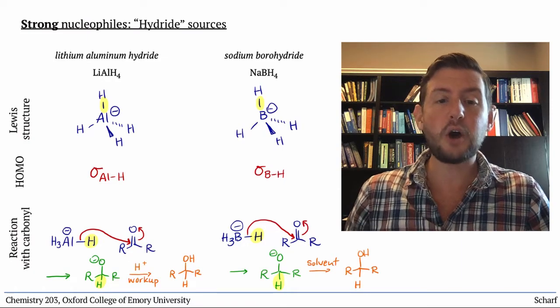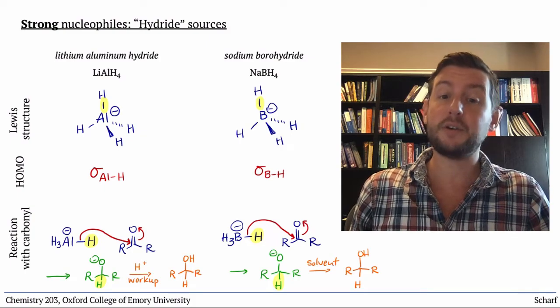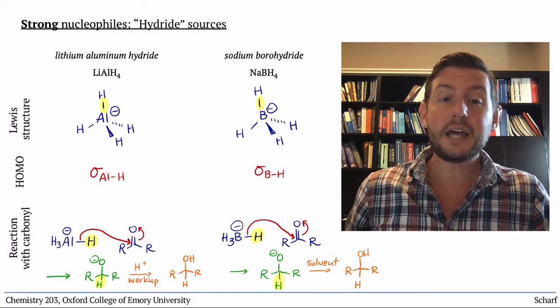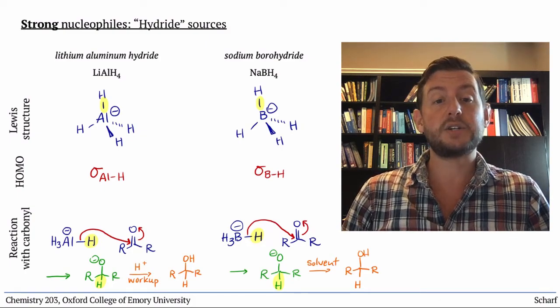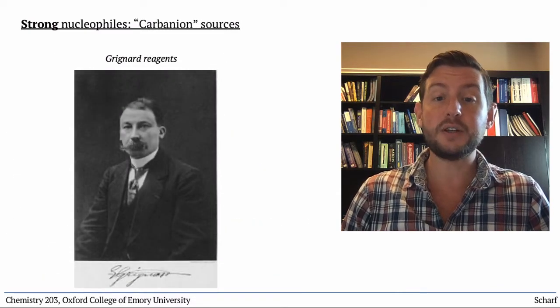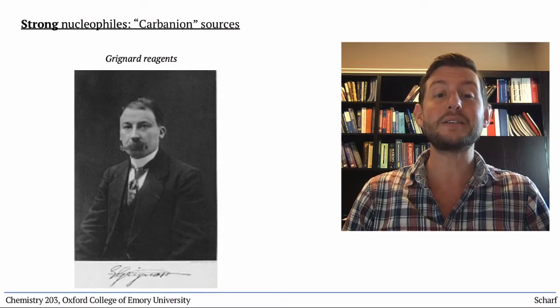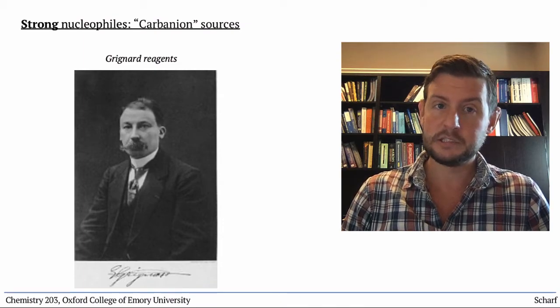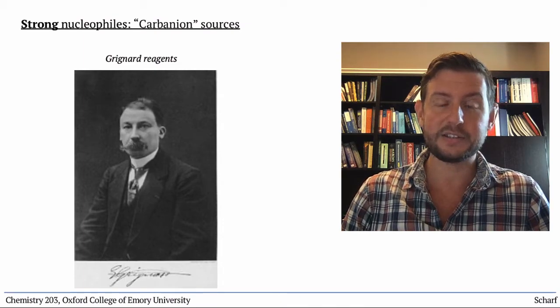But what if we want a new carbon-carbon bond at the carbonyl carbon? The type of reagent we use for this reaction is called a Grignard reagent, after Victor Grignard, a French chemist who was instrumental in the development of chemical warfare agents in World War I.